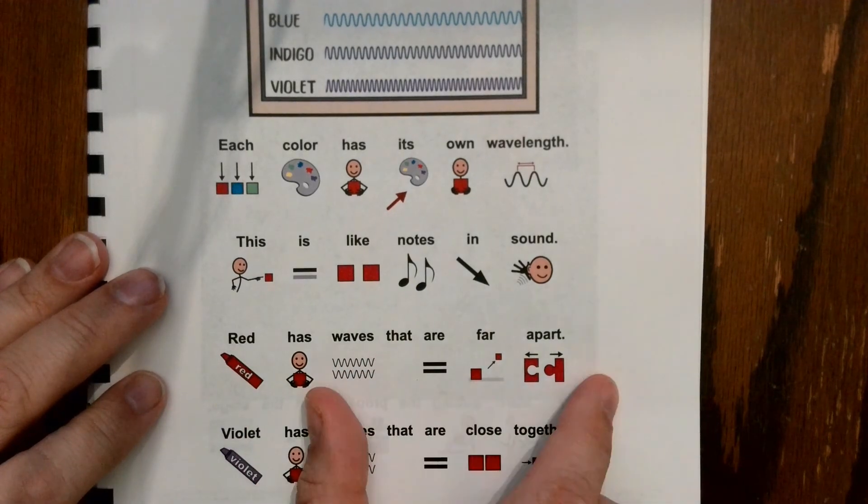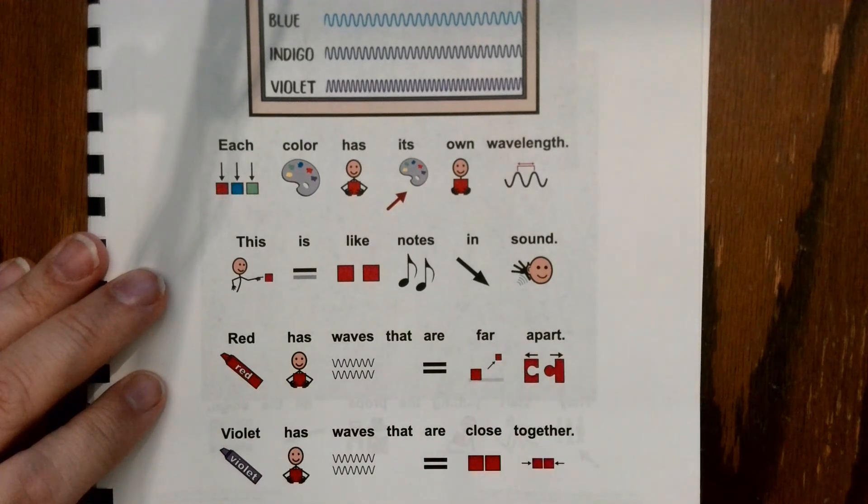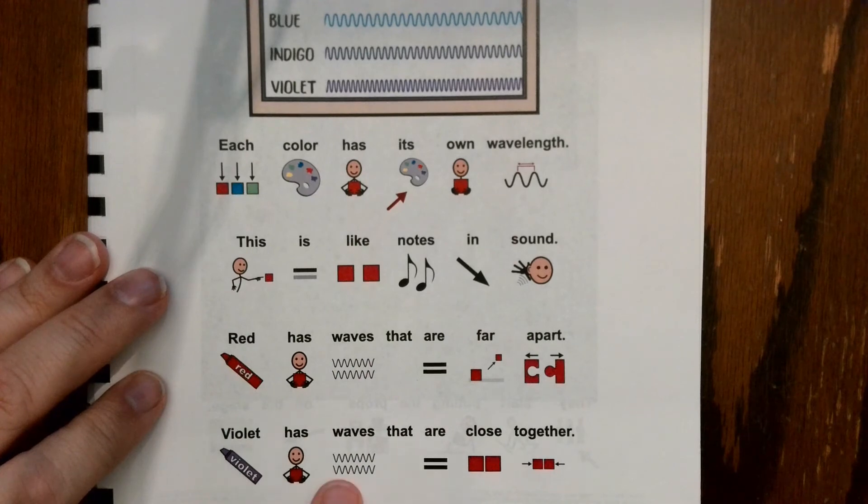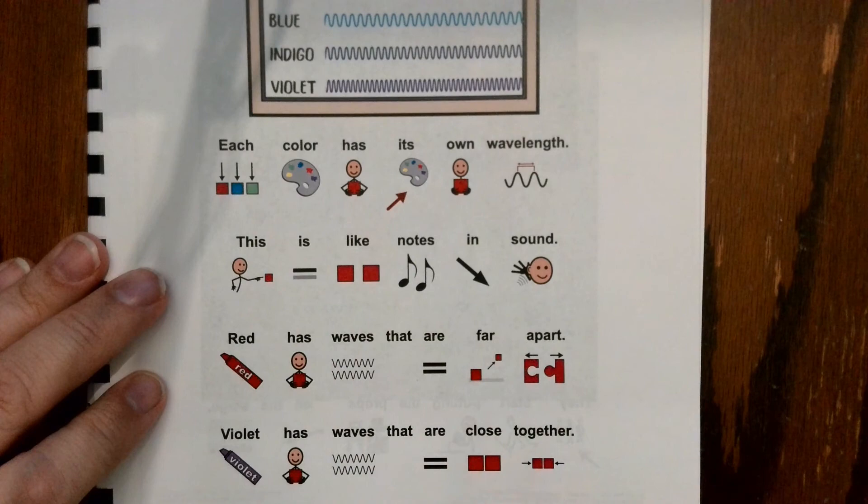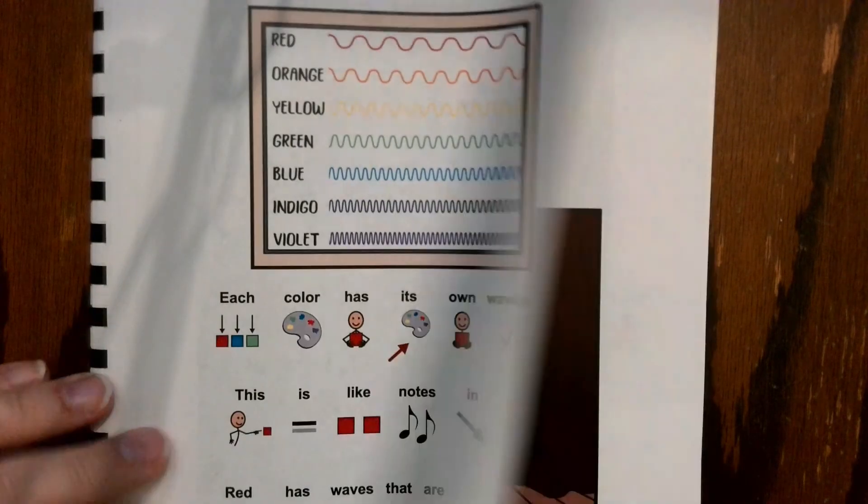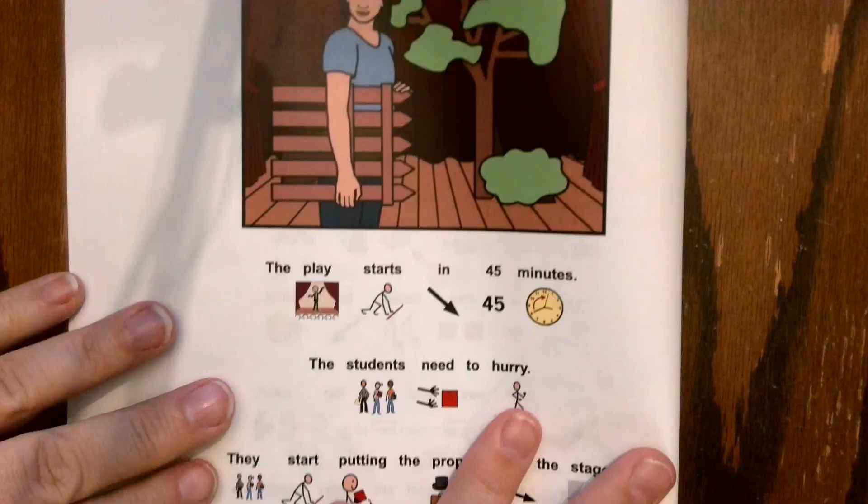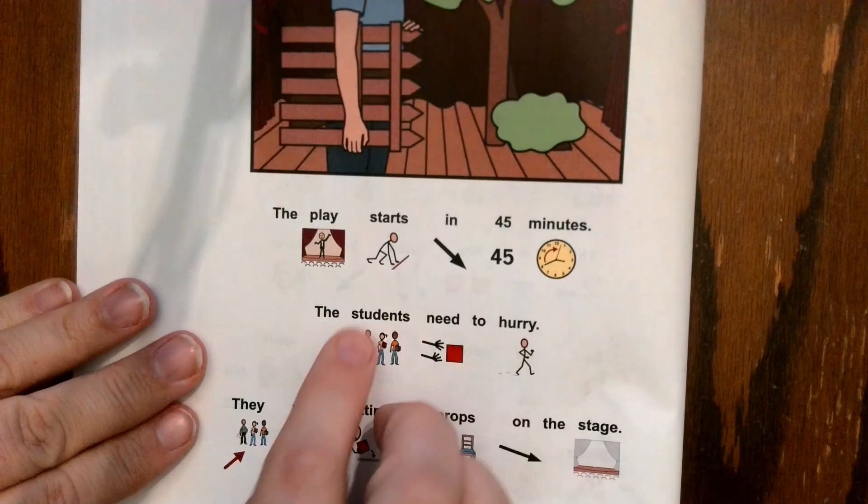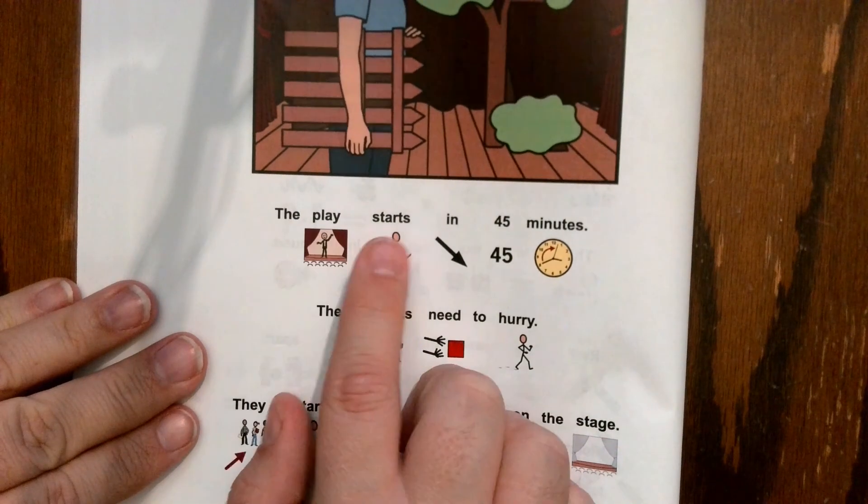Violet has waves that are close together. The play starts in 45 minutes. The students need to hurry.